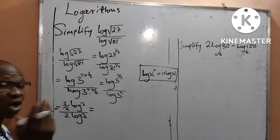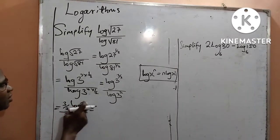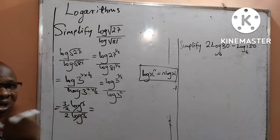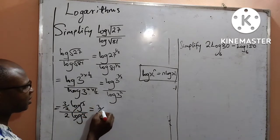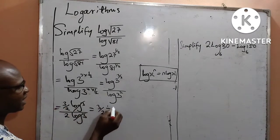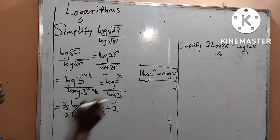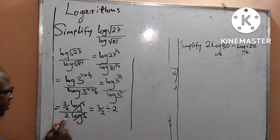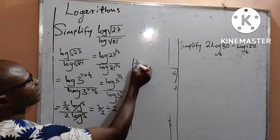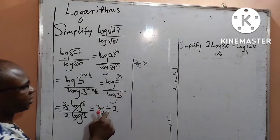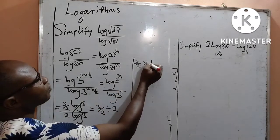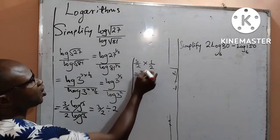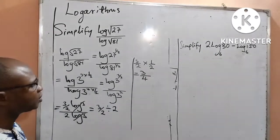Now, you can observe that I have log 3 at the numerator and log 3 at the denominator. I can cancel them out, and what I am left with is 3 over 2 at the numerator divided by 2 at the denominator. Working with that, what I shall now have is 3 over 2 divided by 2, which I change to multiplication to get 3 times 1 over 2 times 2, giving a final answer of 3 over 4.